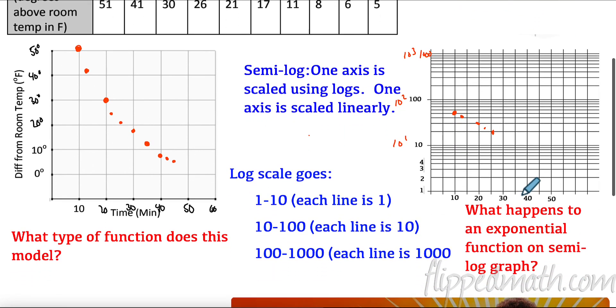We could keep going, but notice what's happening here: we are now actually forming a straight line. And that's what I want you to understand. What happens to an exponential function when it is plotted on a semi-log graph? An exponential function turns to a linear graph. That is big news.